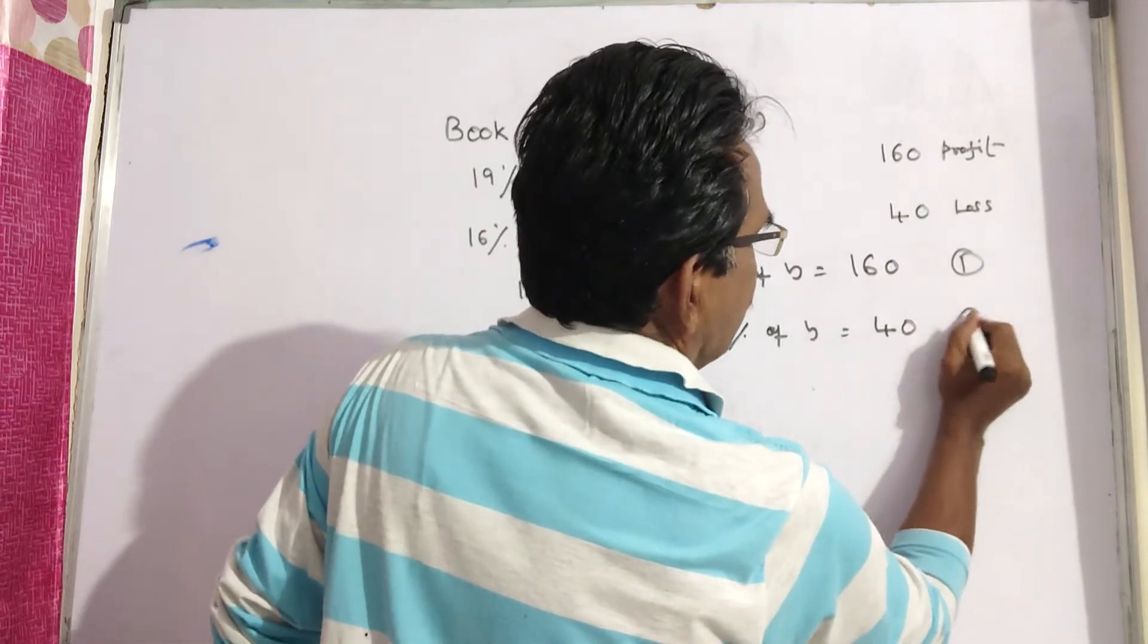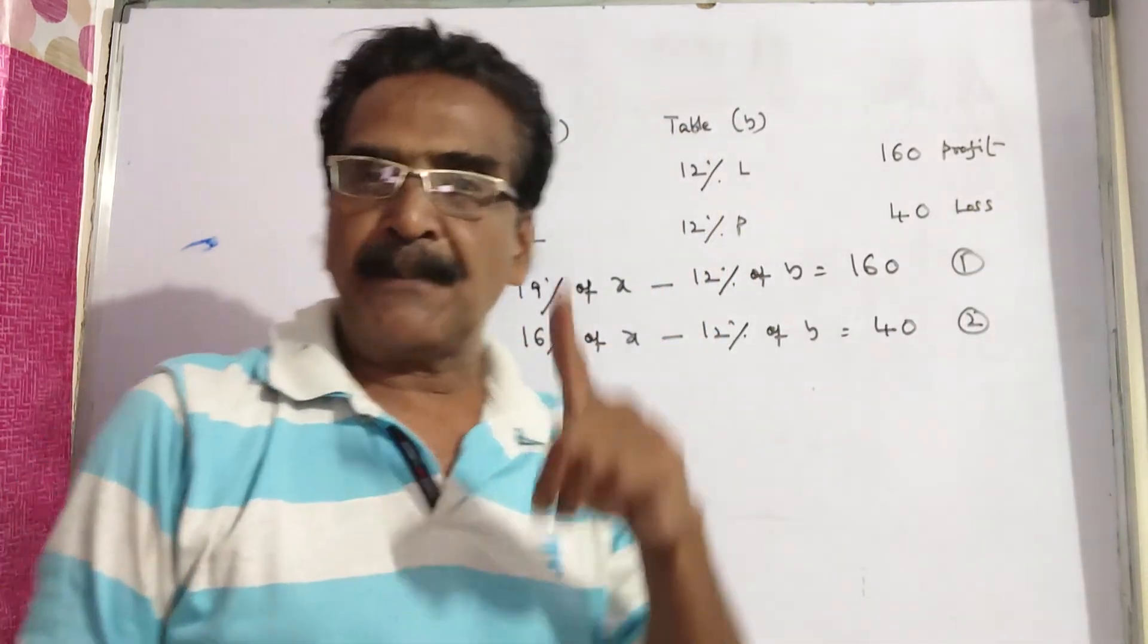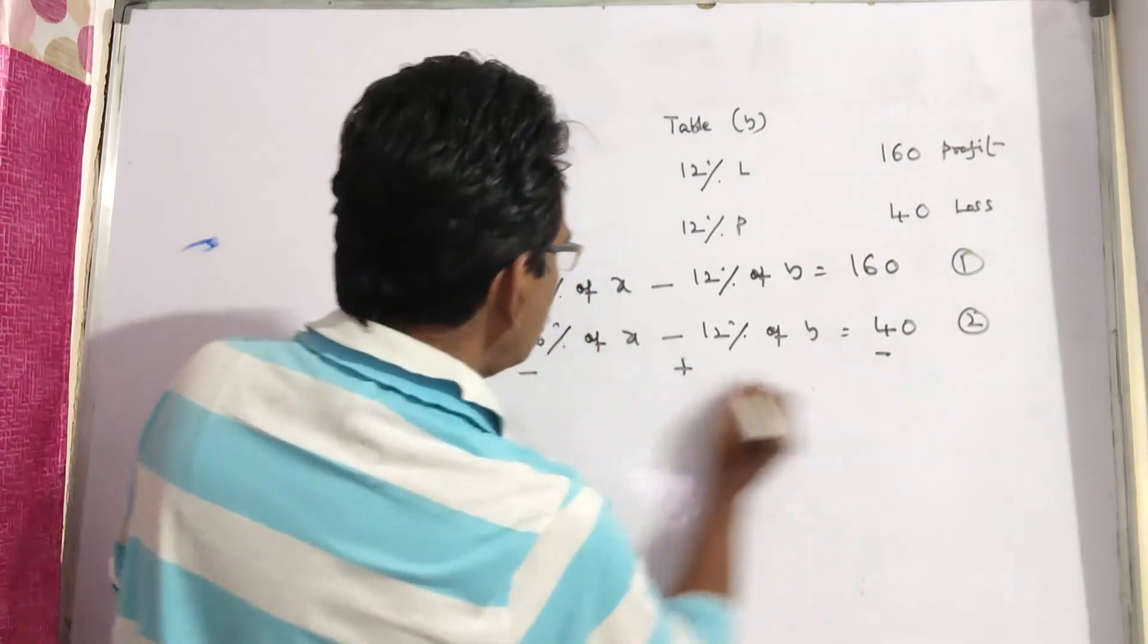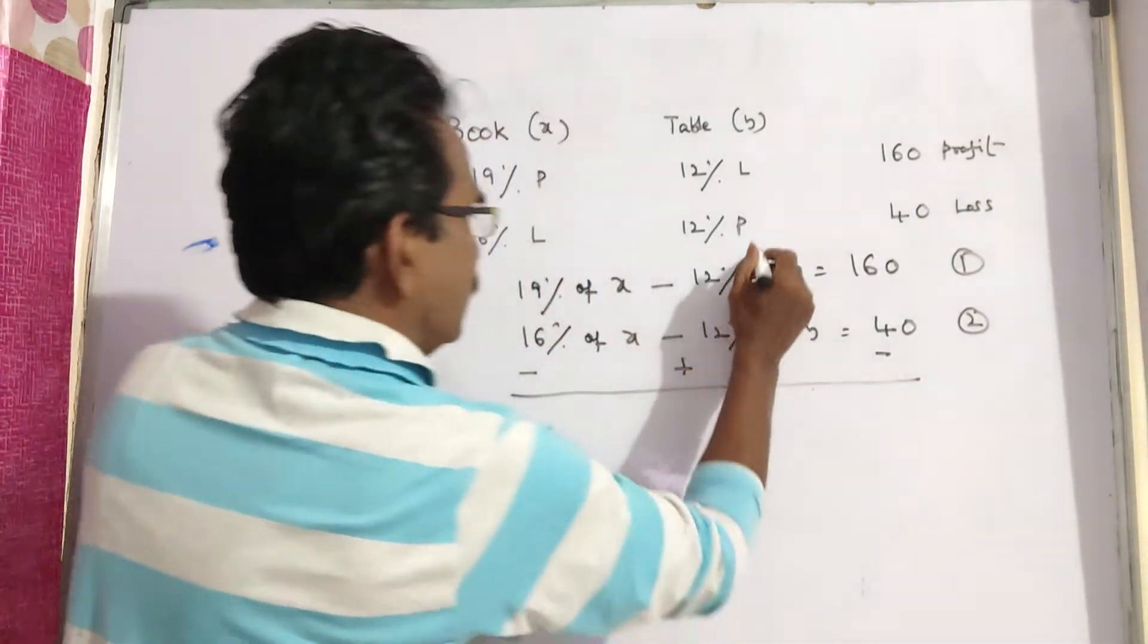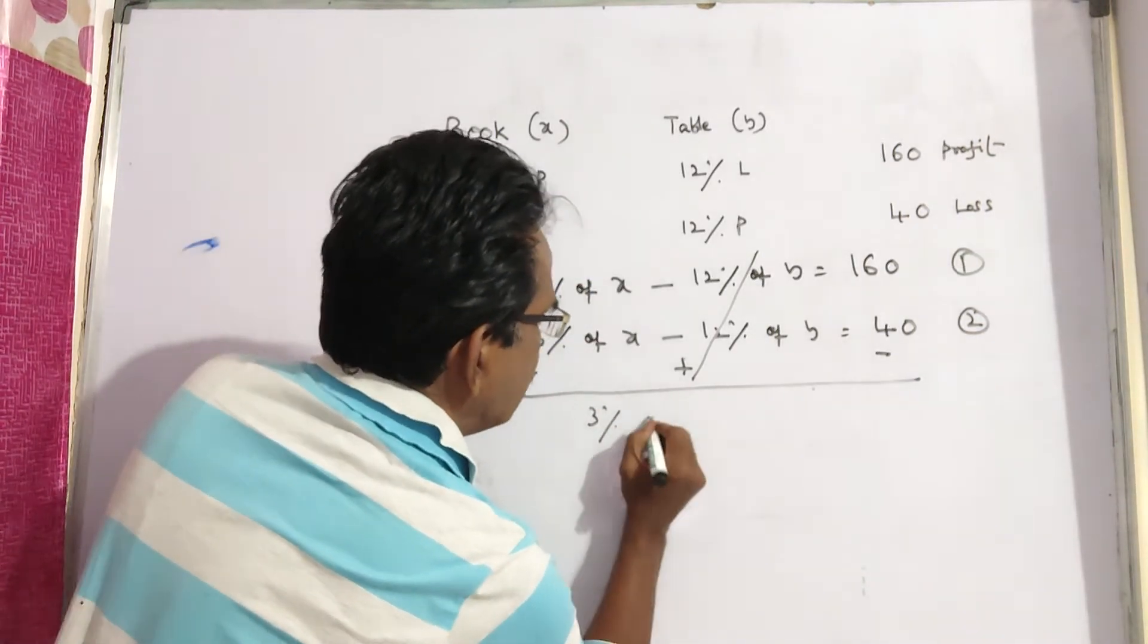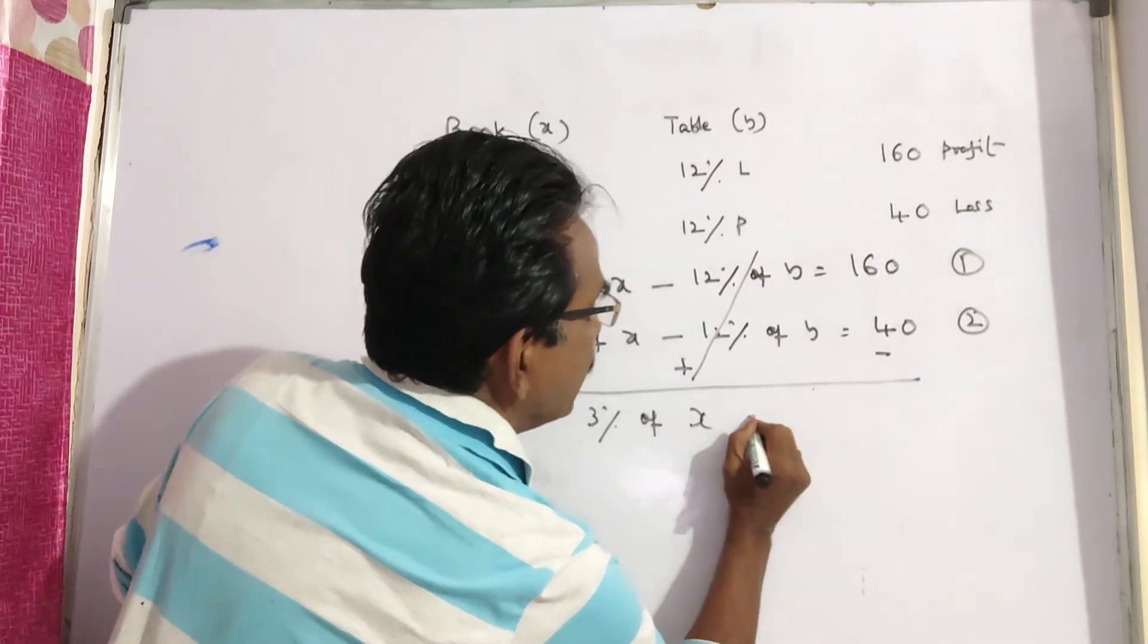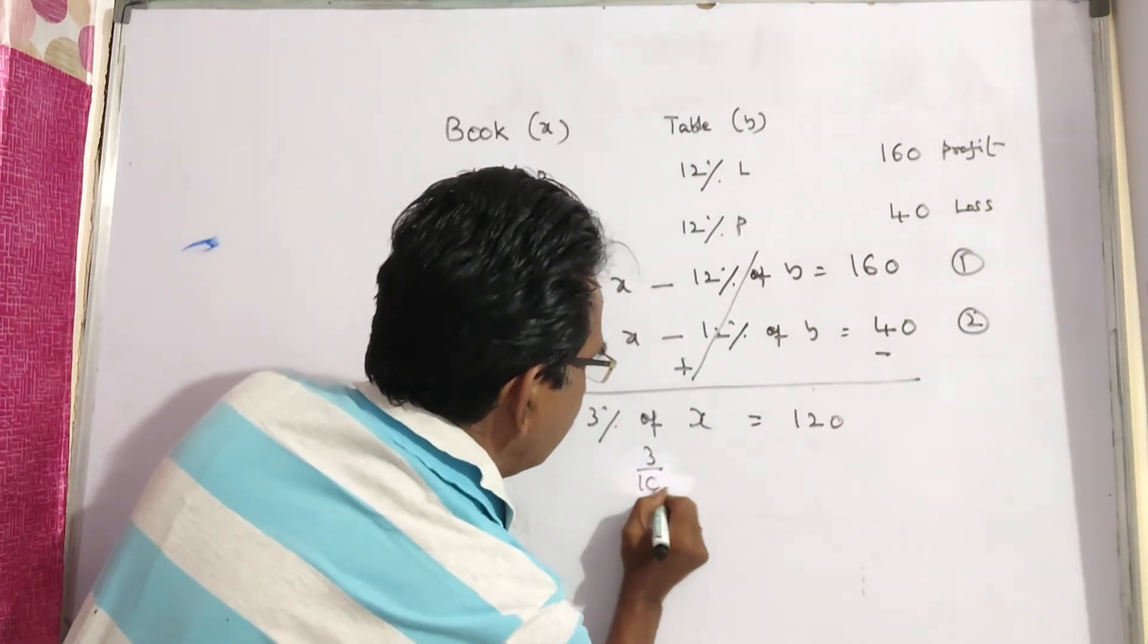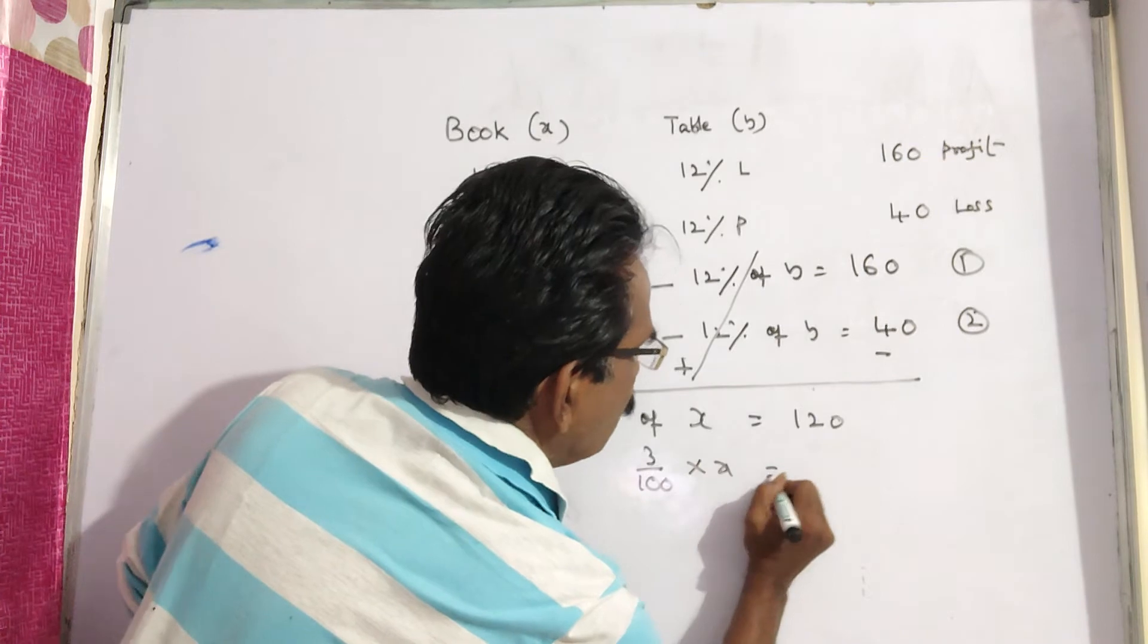Say this is equation 1. This is equation 2. Now I am doing 1 minus 2. It gives us 19 minus 16, 3% of X is equal to 120. 3 by 100 into X is equal to 120.